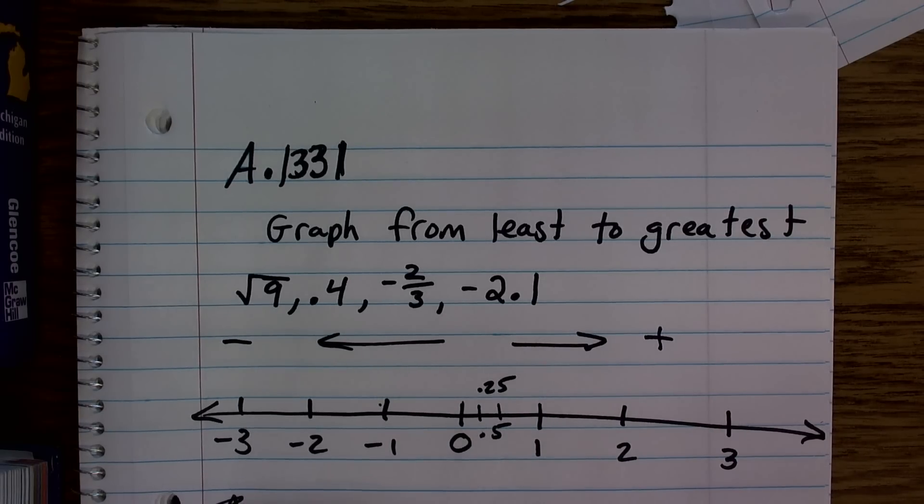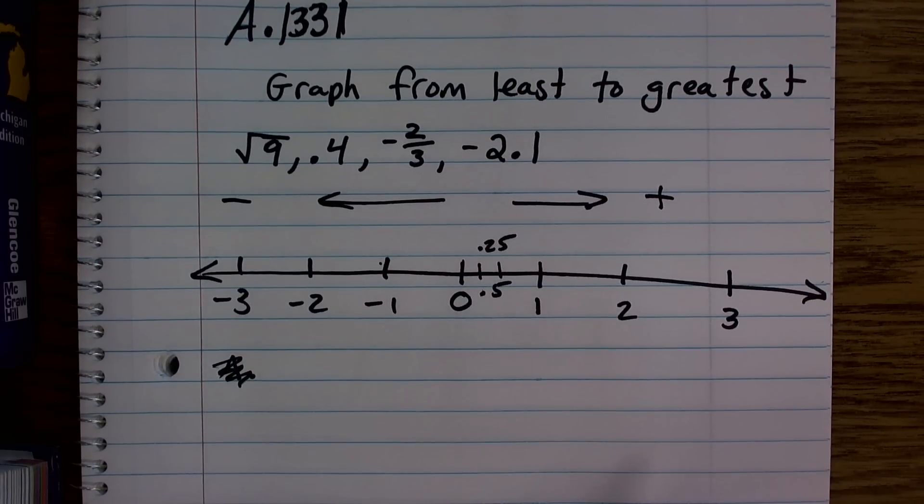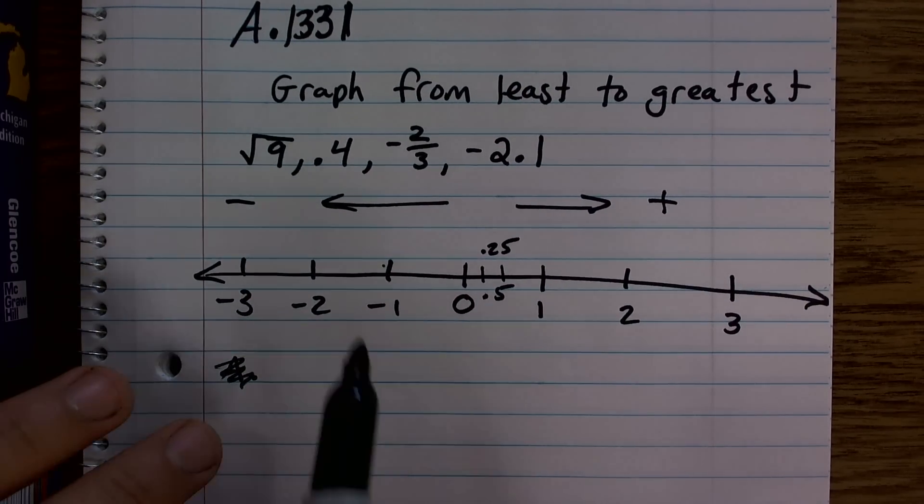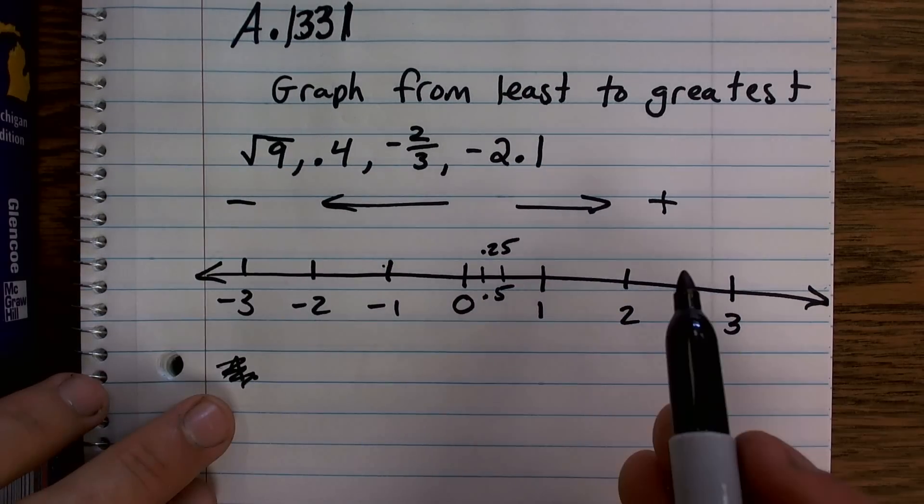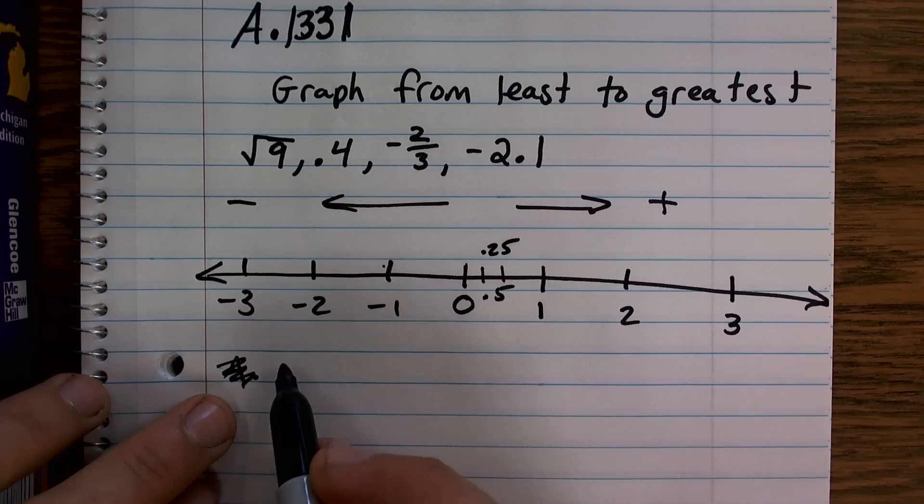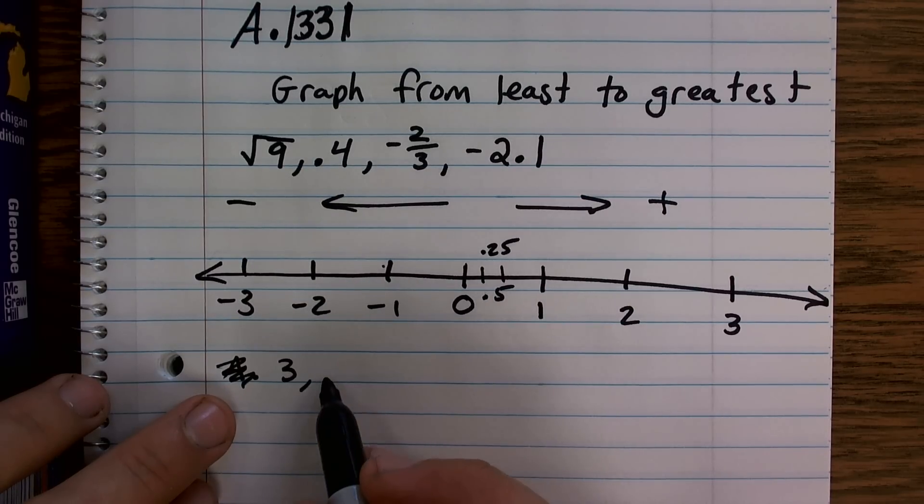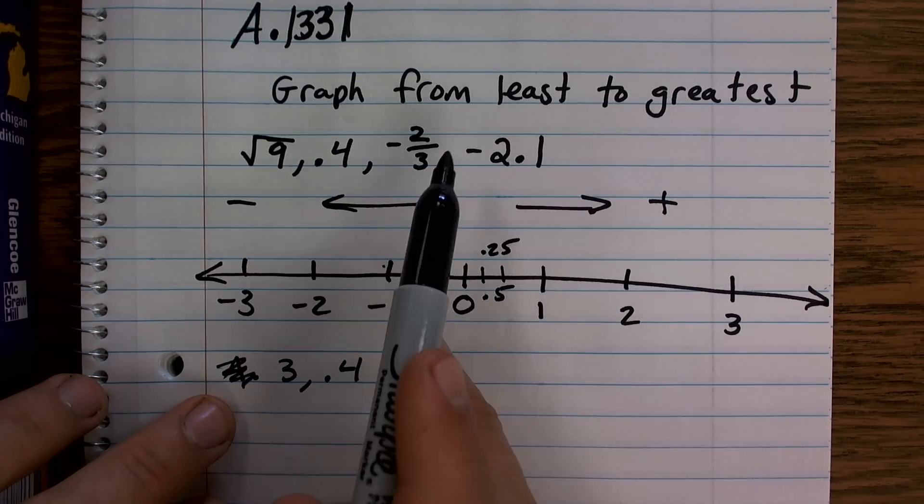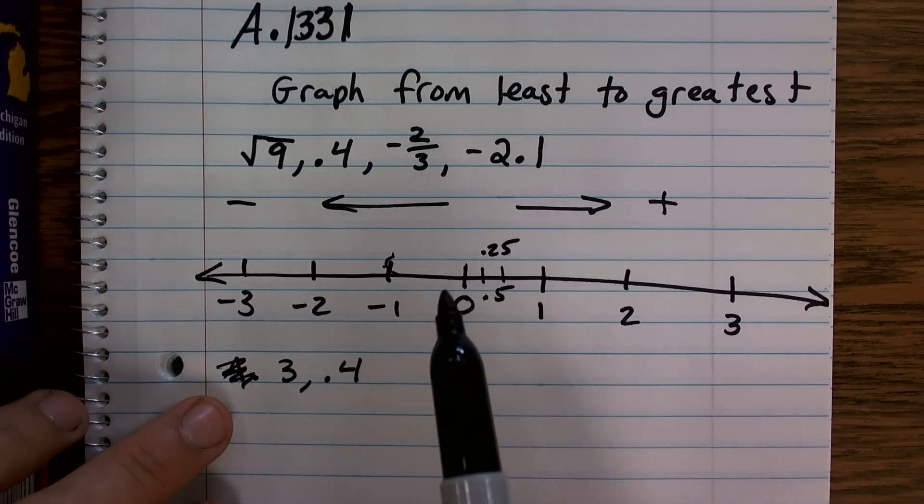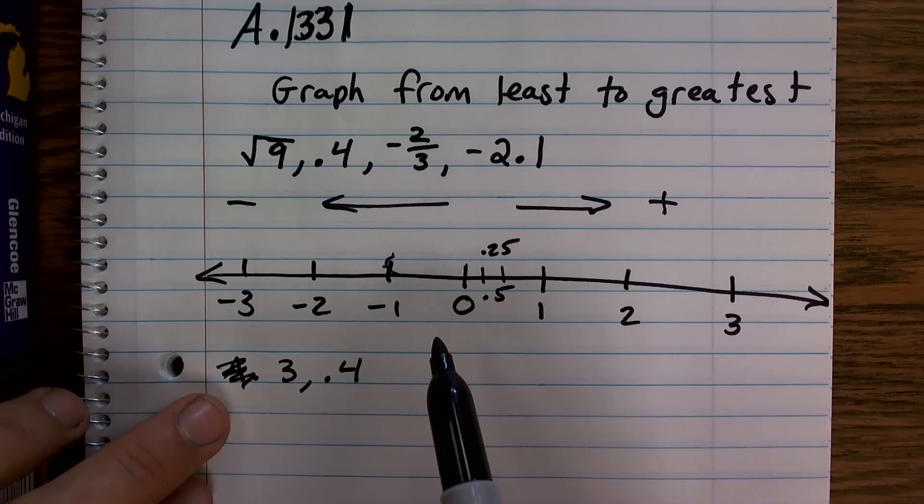So what I'm going to do is, I'm going to rewrite my problem as a list of decimals. So I have the square root of 9, or at least as a simplified version. So the square root of 9, I know, is 3. Then I have 0.4 is already decimal. Now I'm going to want to convert negative 2 thirds to a decimal.